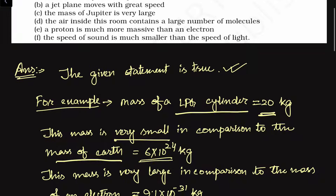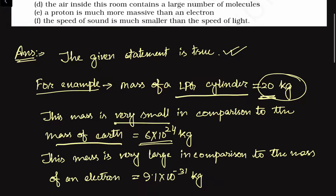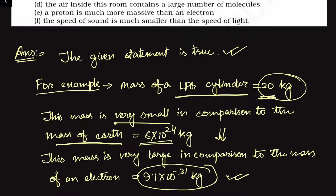This mass is very large in comparison to the mass of an electron. This 20 kg of weight is far greater — very, very larger — than the mass of an electron. But it is very, very smaller than the mass of the earth. When you compare with a large quantity, it feels like it is a very small quantity. And if we compare it with a very small quantity, it will look like a larger quantity.